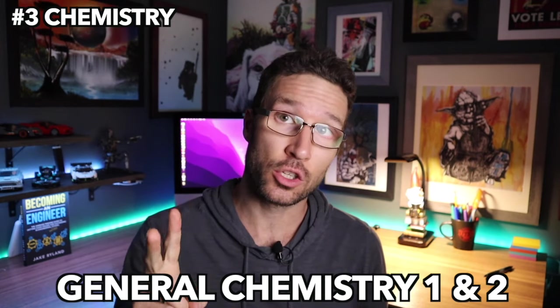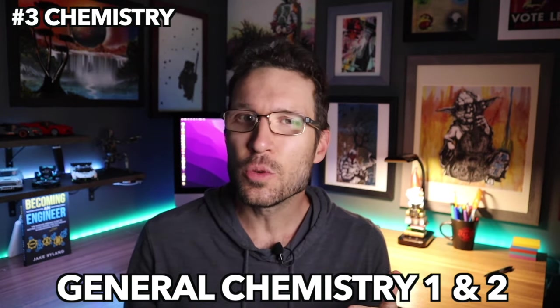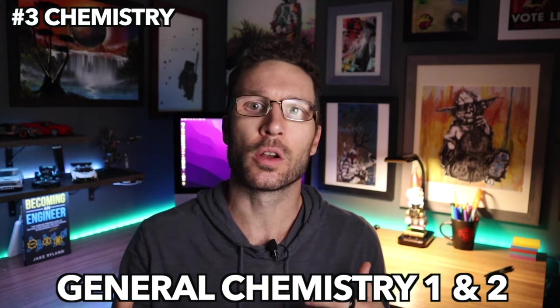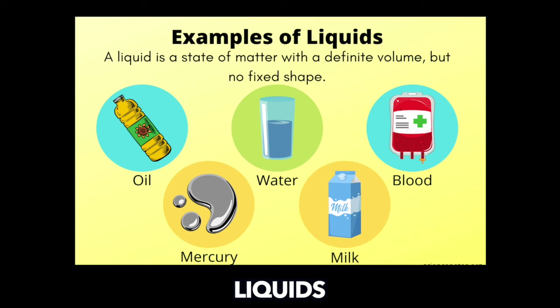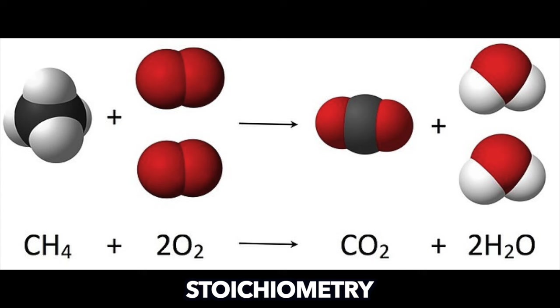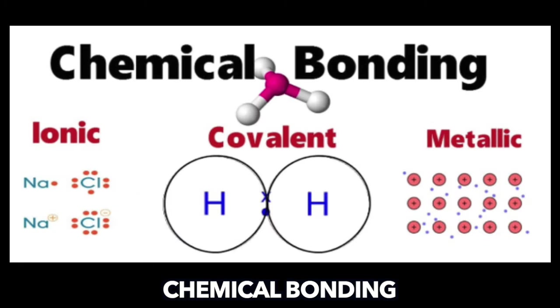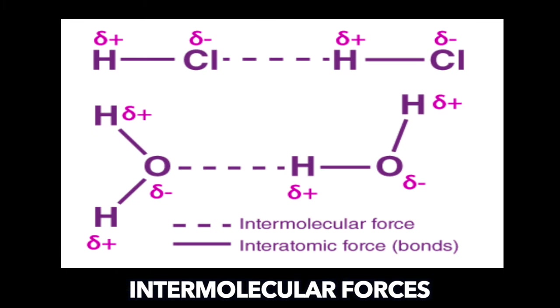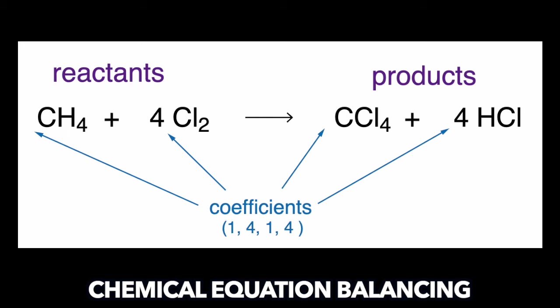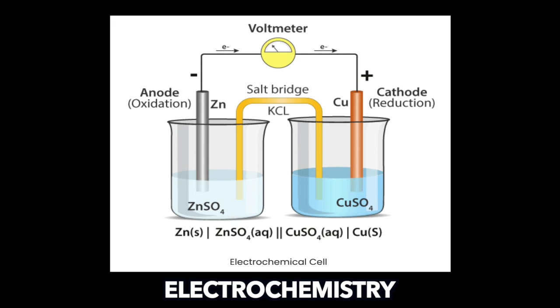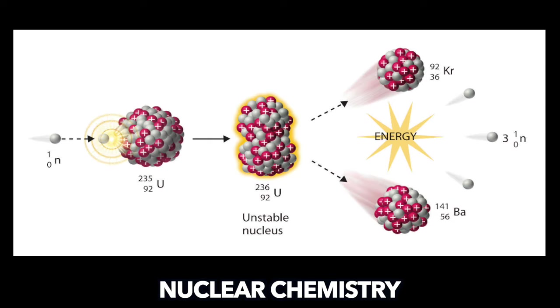Category number three: chemistry. First up we have general chemistry 1 and 2. In this two-part course you're gonna learn all about the periodic table of elements, liquids, gases, solids, stoichiometry, bonding, intermolecular forces, acids, bases, chemical equation balancing, electrochemistry, and nuclear chemistry.